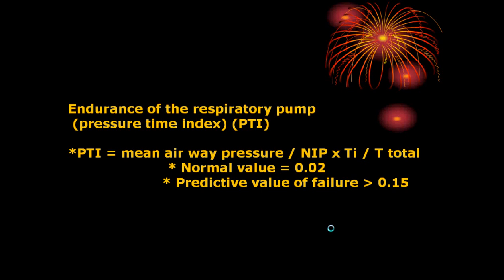The pressure-time index is: mean airway pressure (of the negative inspiratory force) multiplied by the inspiratory time over the total respiratory cycle time (duty cycle). The normal value is about 0.02; the predictive value for failure is more than 0.15.